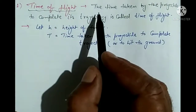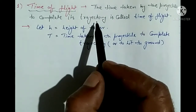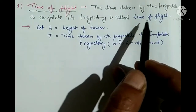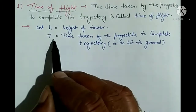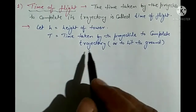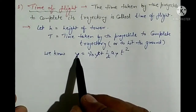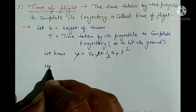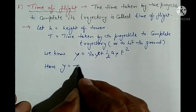First: time of flight. What is time of flight? The time taken by the projectile to complete its trajectory is called time of flight. Let h be the height of the tower and T be the time taken by the projectile to complete its trajectory and hit the ground. We know that for vertical motion: y = V₀ᵧt + ½aᵧt².